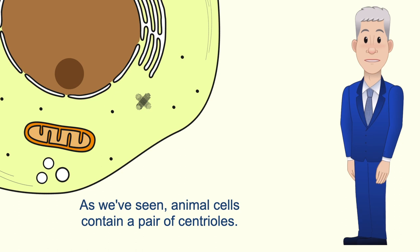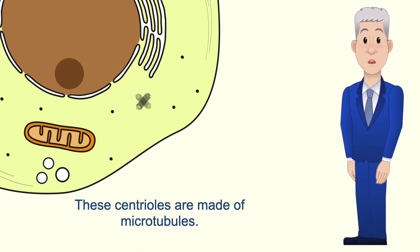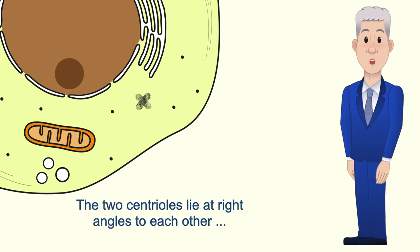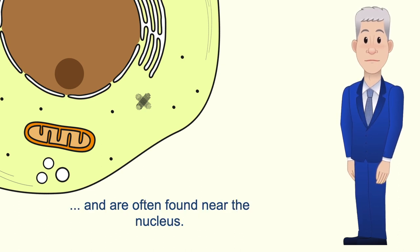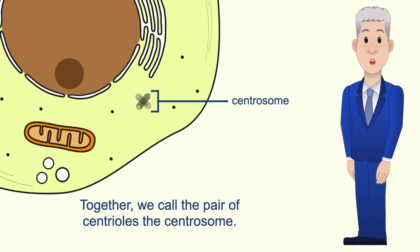Animal cells contain a pair of centrioles and these centrioles are made of microtubules. The two centrioles lie at right angles to each other and are often found near the nucleus, and together we call the pair of centrioles the centrosome.